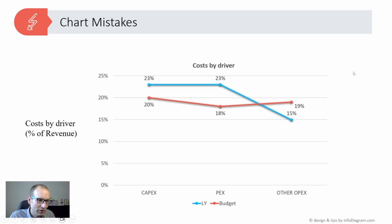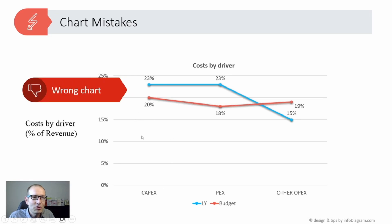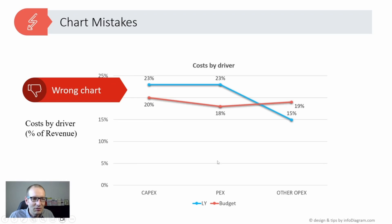One more mistake to be aware of is using the proper format for a chart. For example, this is a line chart using the same values — however, this is not a proper use of the line chart. Line charts should be used when the axis has a continuous variable, such as time — months, years, or minutes. In this case, we are comparing three categories of expenses that are not continuously related, so we should not use this type of chart.